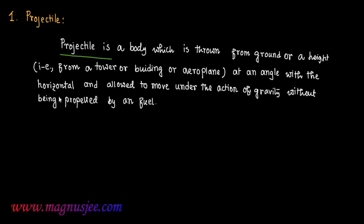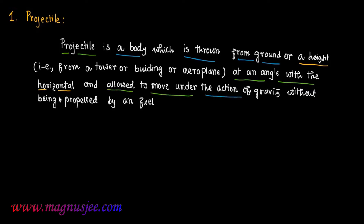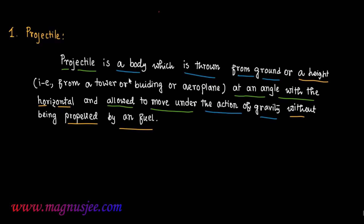Hence, a projectile is a body which is thrown from the ground or a height — from a tower, building, or airplane — at an angle with the horizontal, and allowed to move under the action of gravity without being propelled by any fuel. Now we can write down the examples of projectile.